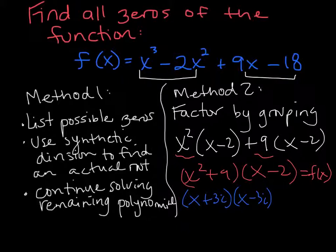Once you foil out and do all four terms, your outer and your inner would drop, and the last term would be minus 9i squared. But remember, i squared is a positive 1, so I would get a plus 9 out of that. So here is this in factored form.